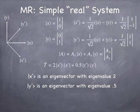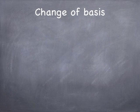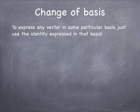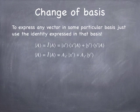Any arbitrary vector can be expressed in the unprimed basis in terms of x and y, or equivalently in the primed basis with x-prime and y-prime basis vectors. Let's talk about change of basis. If I have a vector A and I know its representation in the unprimed basis, I can represent it in the primed basis by inserting the identity expressed as a superposition of projection operators in the primed basis. Each vector will then have an x-prime component or a y-prime component, computed by taking the inner product of the x-prime and y-prime basis vectors with the arbitrary vector.